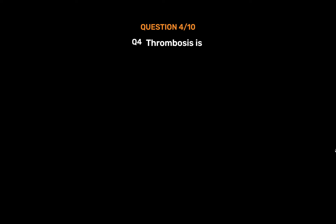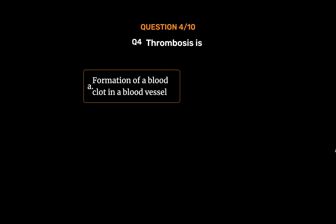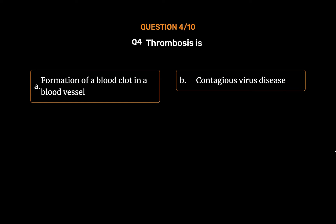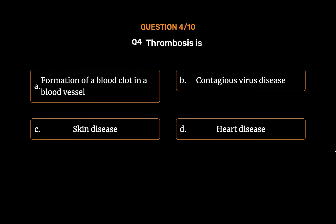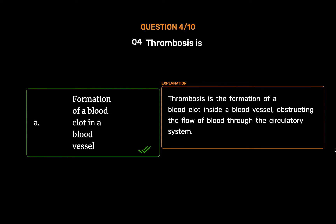Question No. 4. Thrombosis is — Option A: Formation of a blood clot in a blood vessel. Option B: Contagious virus disease. Option C: Skin disease. Option D: Heart disease. The correct answer is Option A: Formation of a blood clot in a blood vessel. Thrombosis is the formation of a blood clot inside a blood vessel, obstructing the flow of blood through the circulatory system.